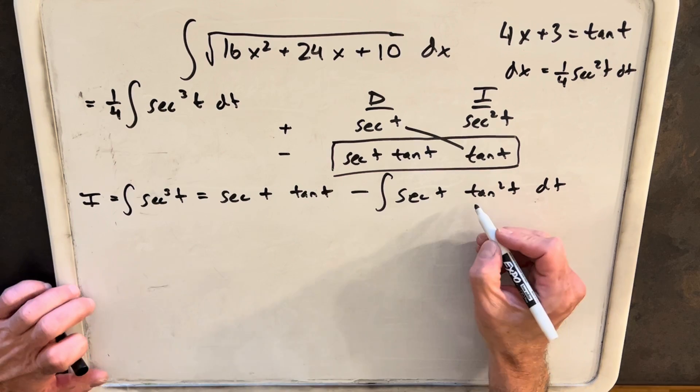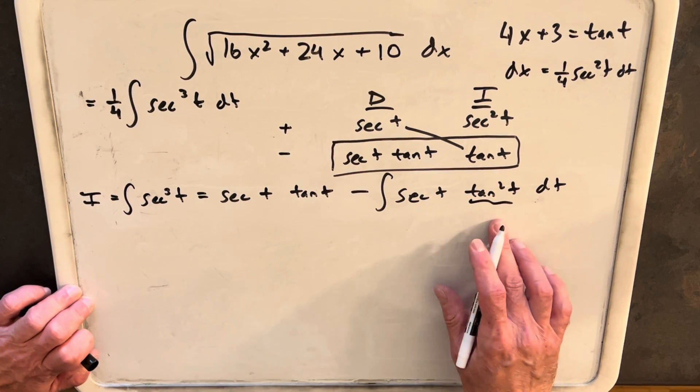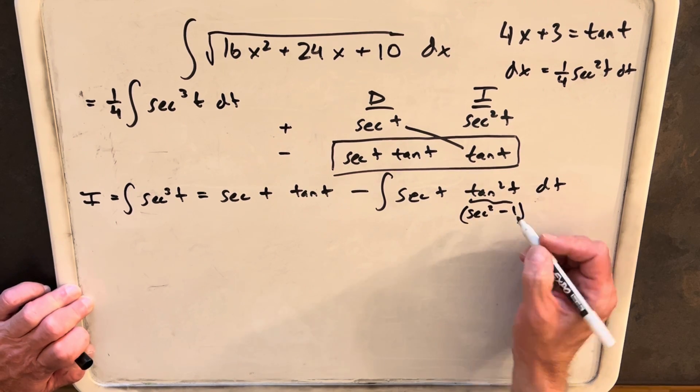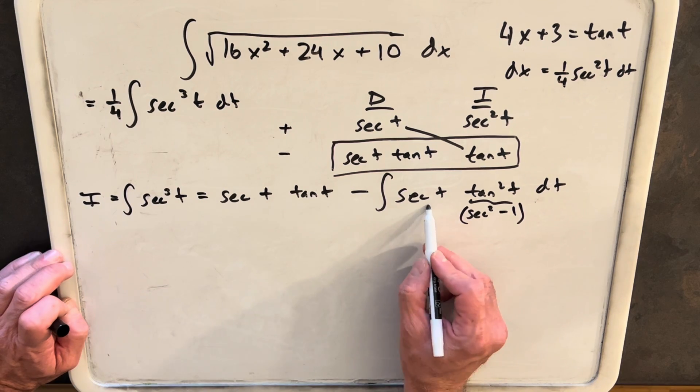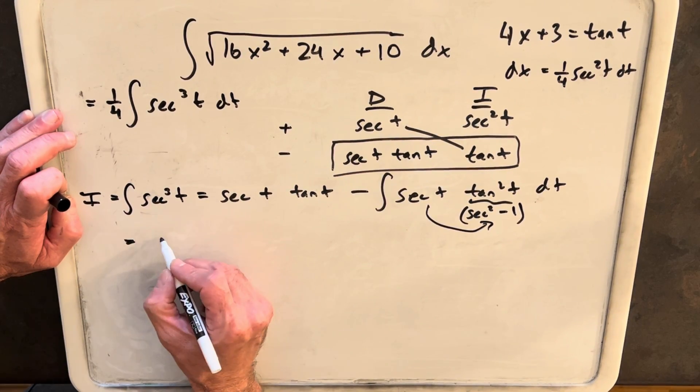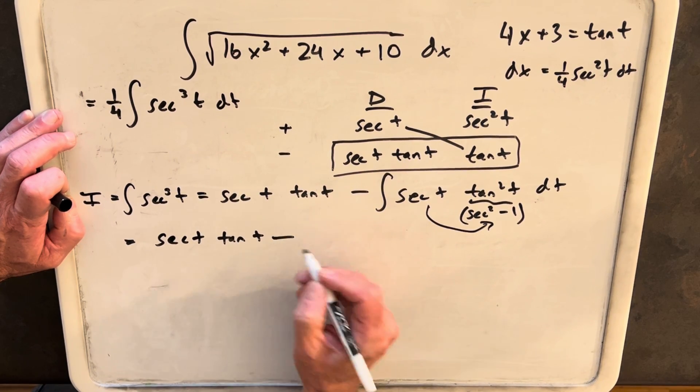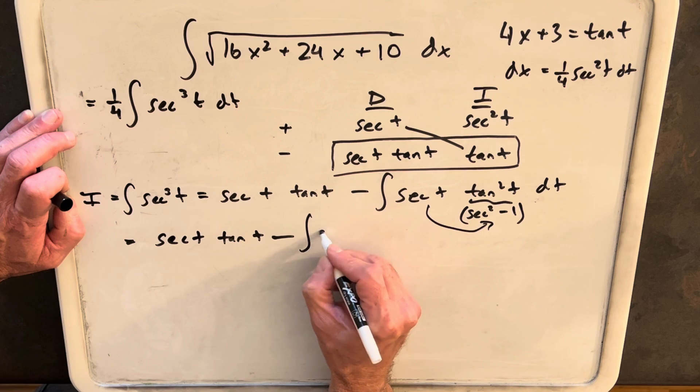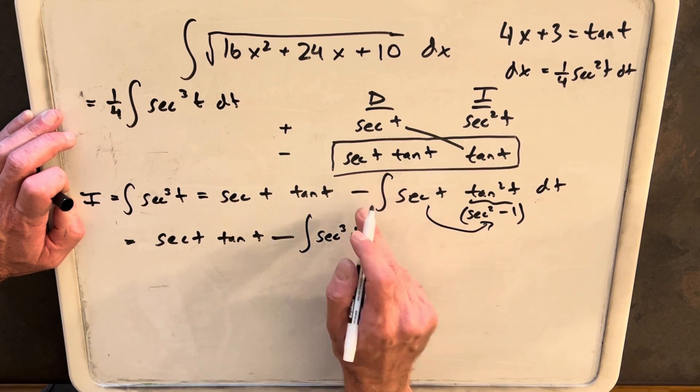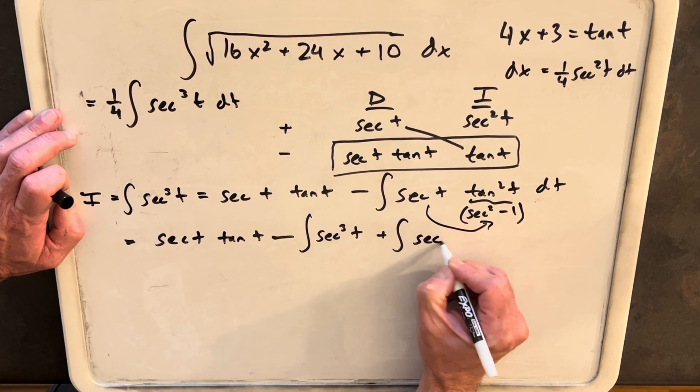But then we can go back and use that same identity we had before. We had tan squared t plus 1 equals secant squared. We can rewrite this piece as secant squared minus 1. Then distributing this here, we can rewrite this whole thing. We're going to have secant t tan t minus the integral of secant cubed t. This here is going to be minus secant t, but we distribute another minus sign.